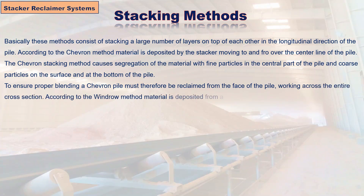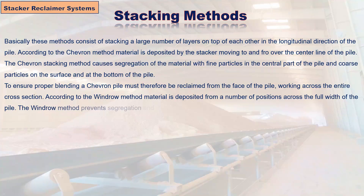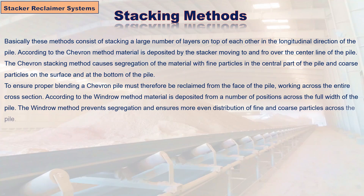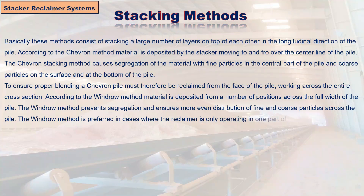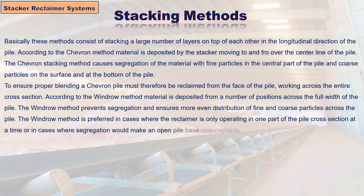According to the windrow method, material is deposited from a number of positions across the full width of the pile. The windrow method prevents segregation and ensures more even distribution of fine and coarse particles across the pile. It is preferred in cases where the reclaimer is only operating in one part of the pile cross section at a time, or where segregation would make an open pile base unacceptable, typically in coal stores.